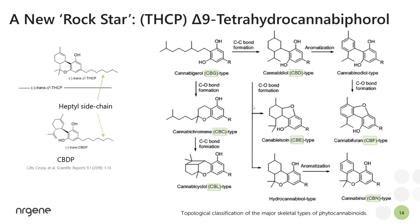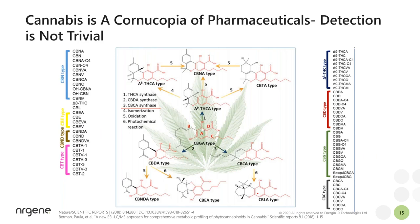There are way more molecules in this huge family than the 9 or 15 prevalent ones. There's a new rock star — from a paper published two months ago by Citti and the group from Italy — they described CBDP and THCP, a new molecule with a seven-carbon side chain. It binds CB1, and they've shown it binds CB1 stronger, therefore creating a longer effect at lower concentrations. So there's a lot of interest in the industry — can you breed for high THCP? From my perspective, this is not more interesting than any of the other less-known cannabinoids in the family.